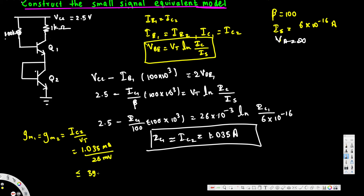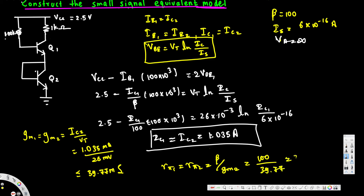ic2 is 1.035 milliamperes divided by vt of 26 millivolts, giving gm equal to 39.77 milli-Siemens. rπ1 equals rπ2, calculated as beta divided by gm2 — that is 100 divided by 39.77 — which equals 2.515 kilohms.